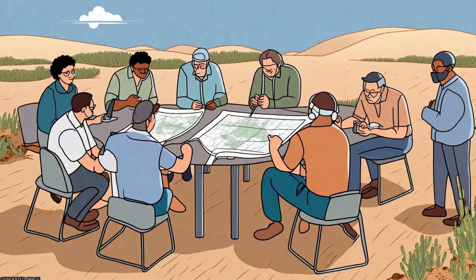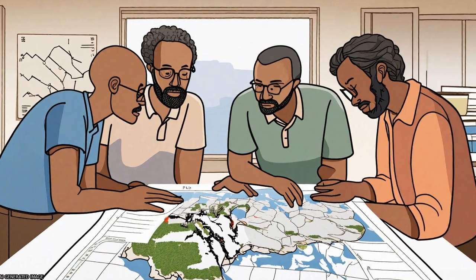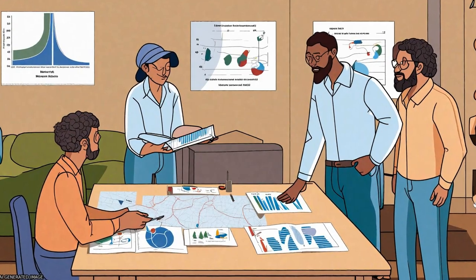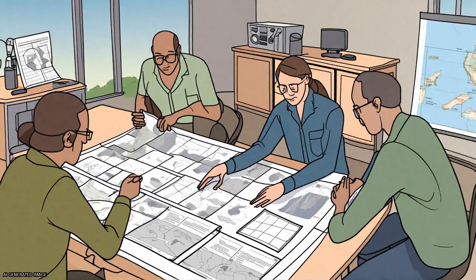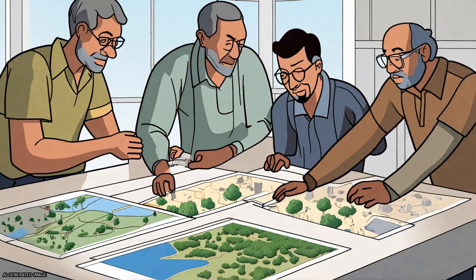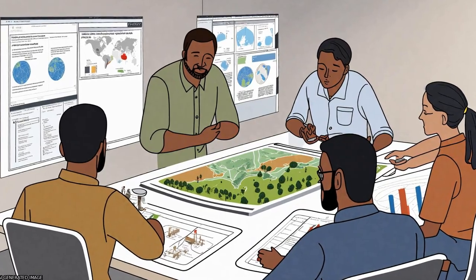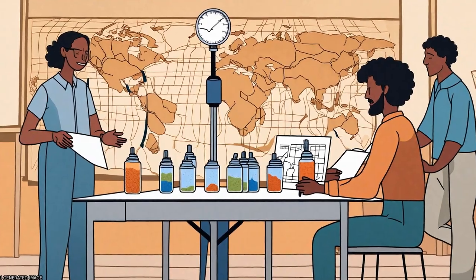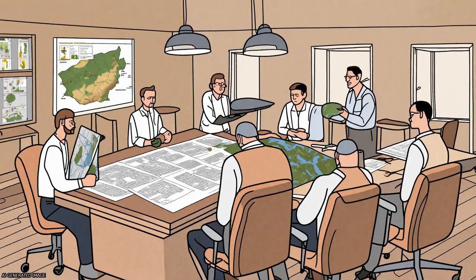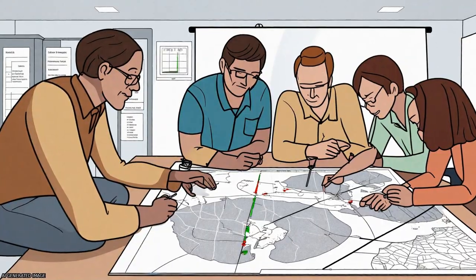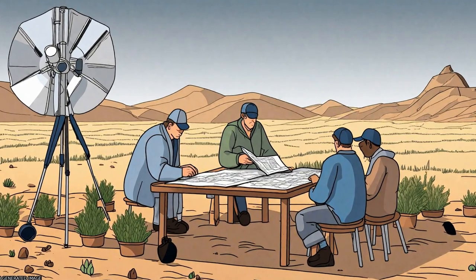Soil moisture was recently added to the list of Essential Climate Variables (ECVs), which are deemed essential for IPCC and UNFCCC needs and considered feasible for global observation. To create a consistent data record, multiple data sources including active and passive microwave observations in the low-frequency range should be used.